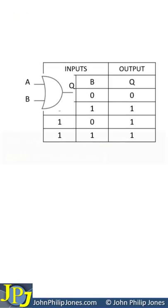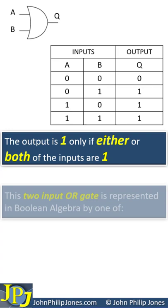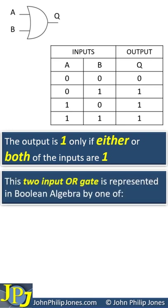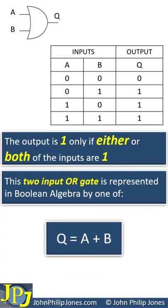Let's move these to one side and consider the fact that a two-input OR gate is represented in Boolean algebra by one of the following. We have Q, the output, being equal to A or B, where A and B are the inputs.